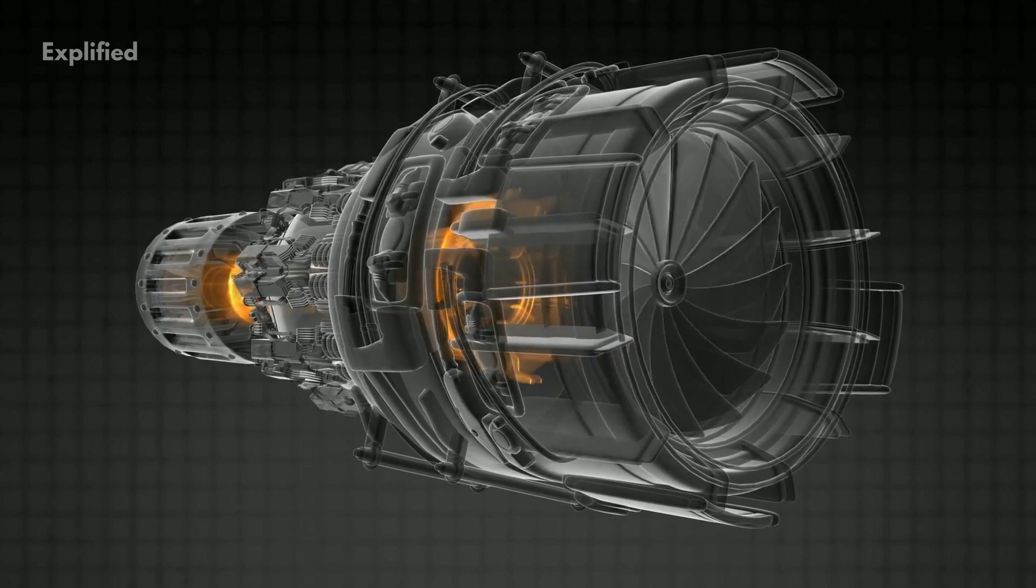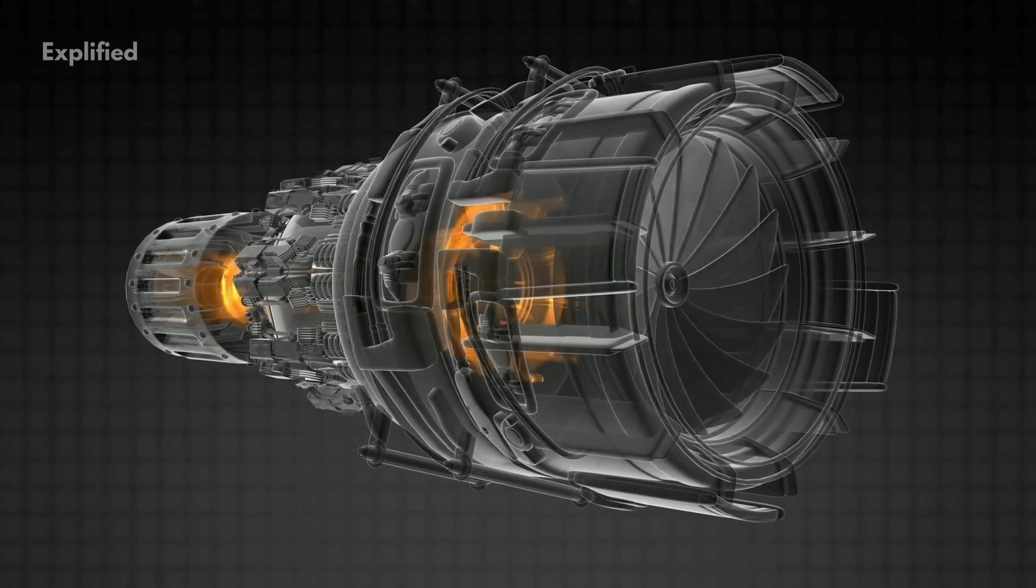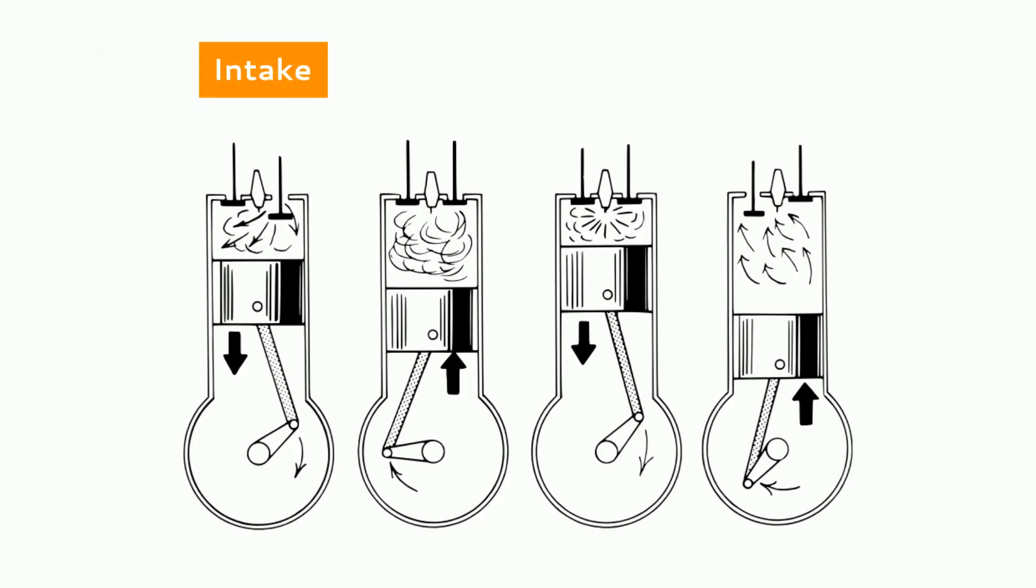The basic four steps for an internal combustion engine are: intake of air and maybe the fuel as well, compression of the air and maybe the fuel too, combustion in which fuel is added if it was not brought in with the intake air and heated to change the stored energy, and finally expansion and exhaust where the converted energy is put to use.